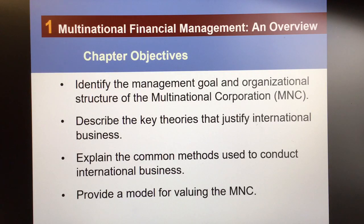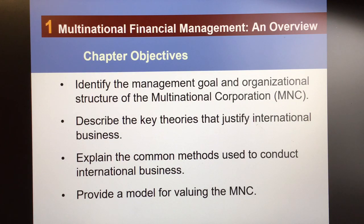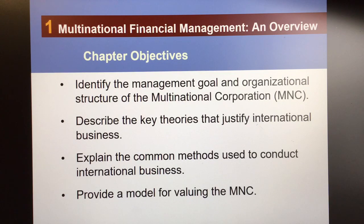Let's get going. Here are the chapter objectives, each straight from the textbook: identify the management goal and organizational structure of the multinational corporation; describe the key theories that justify international business; explain the common methods used to conduct international business; and provide a model for valuing the multinational corporation. This first chapter, like many initial chapters in a textbook, is an overview — a blueprint for what's ahead — covering things we'll go into further detail on later.